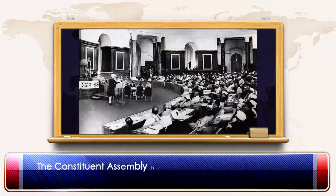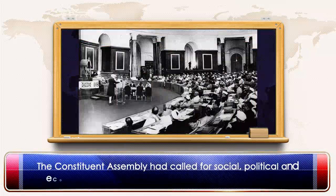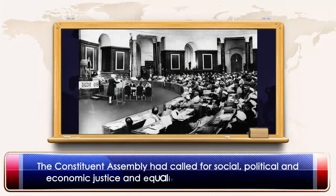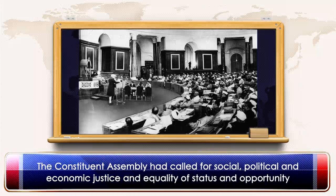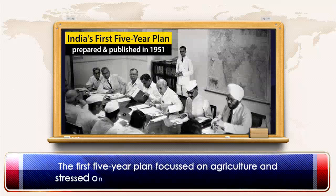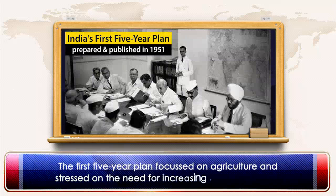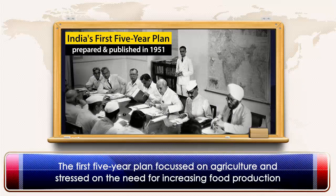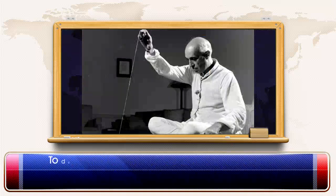The Constituent Assembly had called for social, political, and economic justice and equality of status and opportunity. The first Five-Year Plan focused on agriculture and stressed on the need for increasing food production.